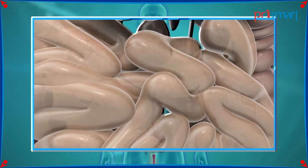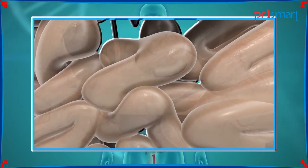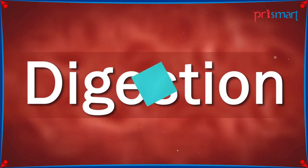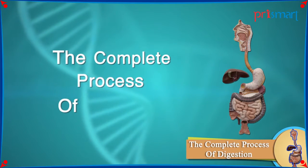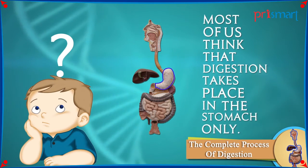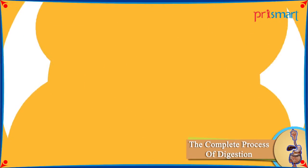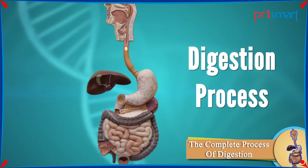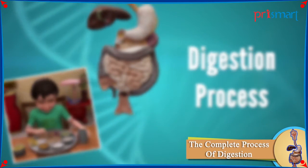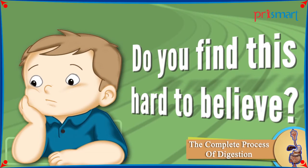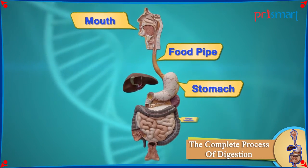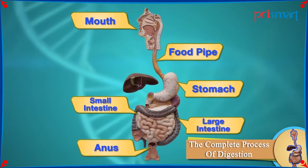The process by which the complex food that we eat is broken down to a simple form that can be easily absorbed by the blood in the body is called digestion. Most of us think that digestion takes place in the stomach only, but this is not true. Digestion is a long process that starts as soon as we put a morsel of food into the mouth and start chewing. Let us try to know the process of digestion better and learn about the different stages of this process.